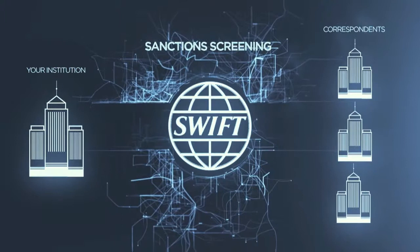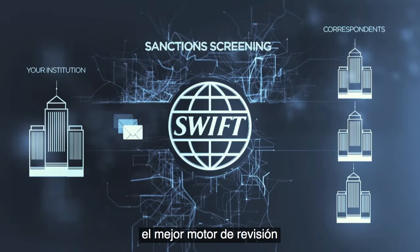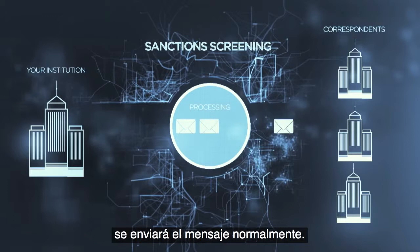You select which messages you would like to be screened. When messages are sent, they are filtered through a best-in-class screening engine. If there is no match, the message is delivered as normal. However, if the system identifies a potential match, the message is held and an alert is sent to you for investigation.